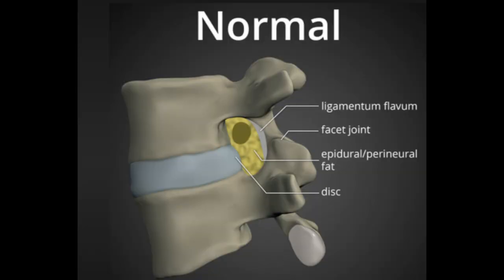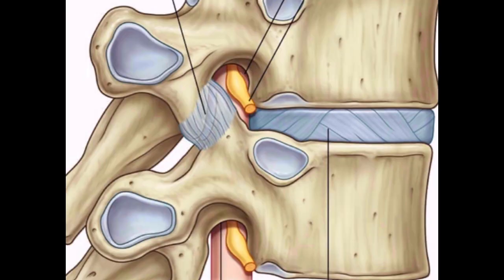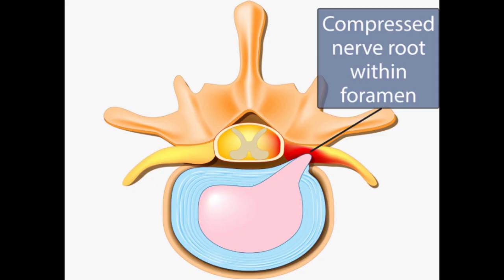The foramen is just behind and to the side of the disc. As you can see here, a slightly bulbous dorsal root ganglion, which is a part of the nerve root, lies in the foramen and is extremely sensitive. It gets swollen and irritated by a protruding disc pushing it onto the often hypertrophic facet joint.